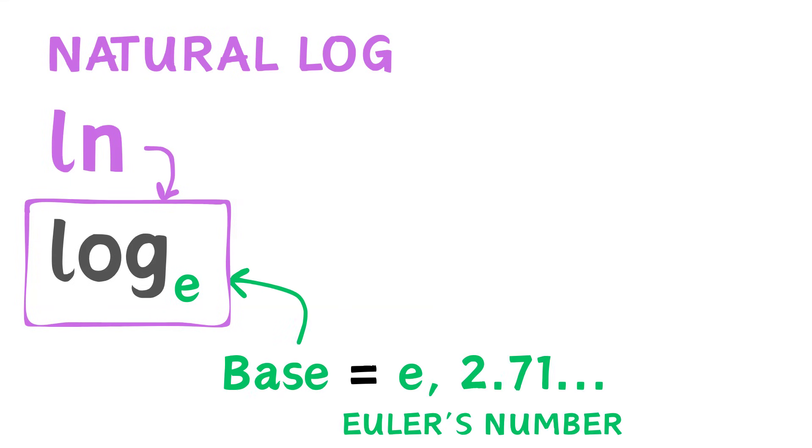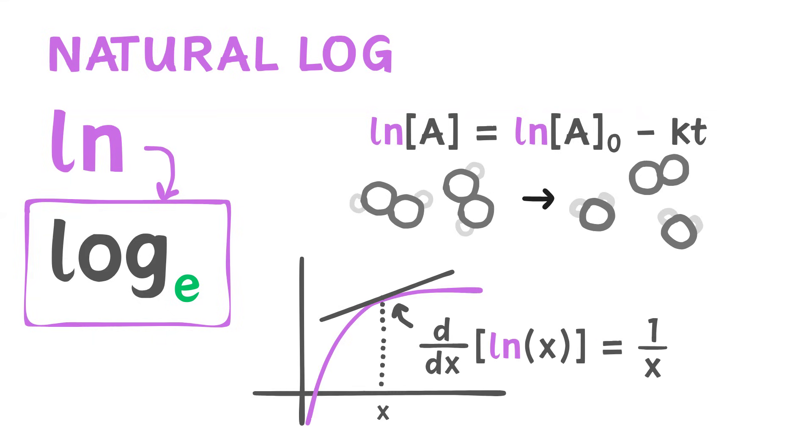Now, sometimes, instead of log, you may see ln. This means the natural log, which is just a logarithm whose base is Euler's number, or 2.71. The natural log is used a lot in science and calculus, especially in continuous growth problems like population or interest.